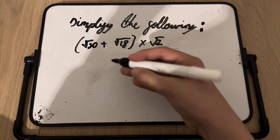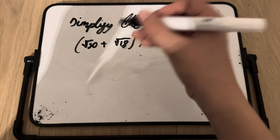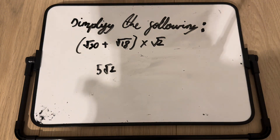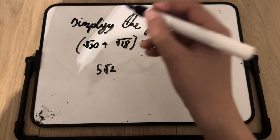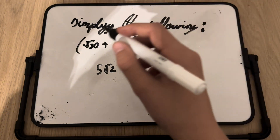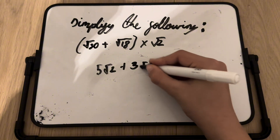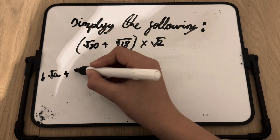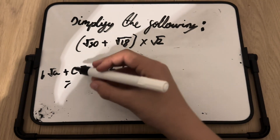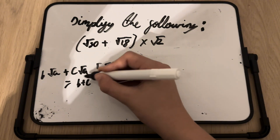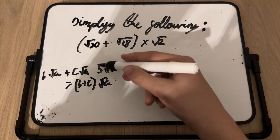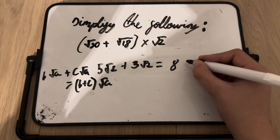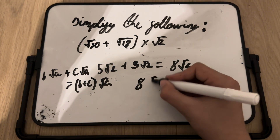Simplify √50: that's √(25 × 2), and since √25 = 5, it becomes 5√2. Simplify √18: that's √(9 × 2), and since √9 = 3, it becomes 3√2. Since both terms are multiples of √2, we can add the coefficients: 5 + 3 = 8, so the expression becomes 8√2 multiplied by √2.